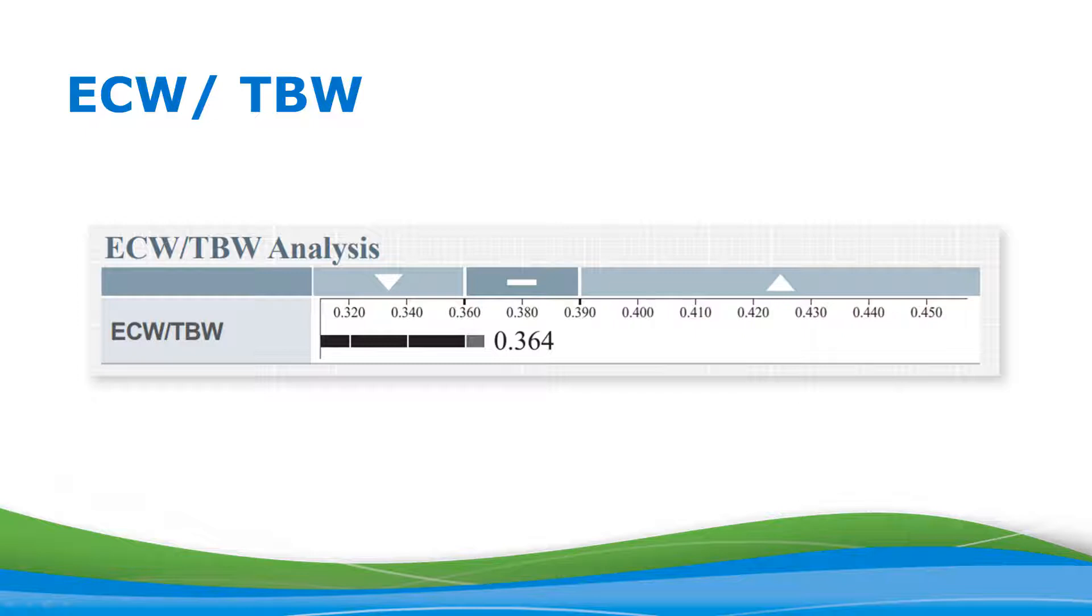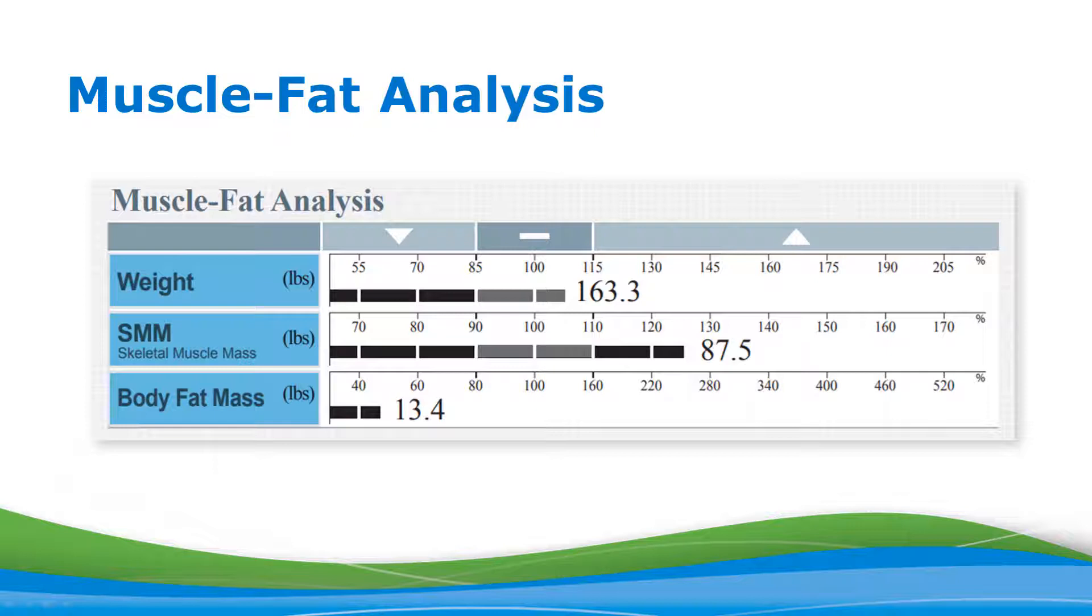Going back to near the top of the page, the second section from the top is the muscle fat analysis. Here we have values for total body weight, skeletal muscle mass, which is the total weight of skeletal muscle that can be grown and developed through exercise, and body fat mass, which combines both surface level and internal or visceral fat. You can see there's three columns: a down arrow column, a dash column, and an up arrow column for each value.